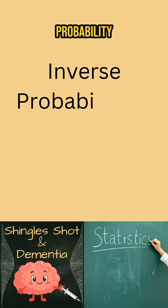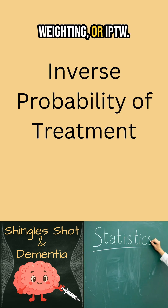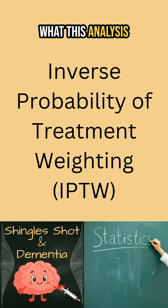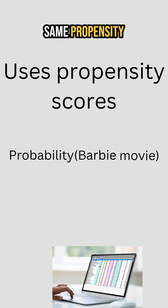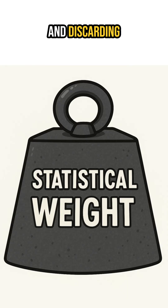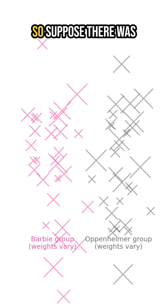It's called Inverse Probability of Treatment Weighting, or IPTW. What this analysis does is it uses the same propensity scores that we've already calculated. Instead of matching and discarding people, it weights everyone by the inverse of their probability of being in their group.